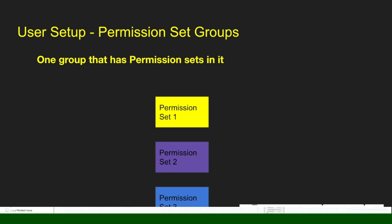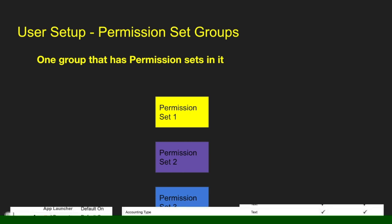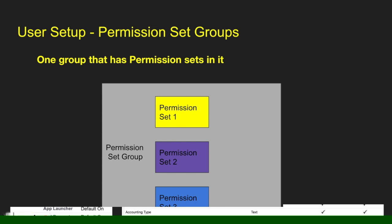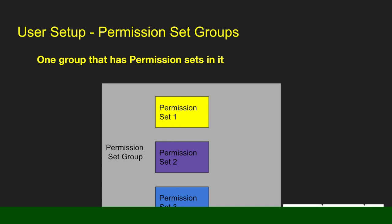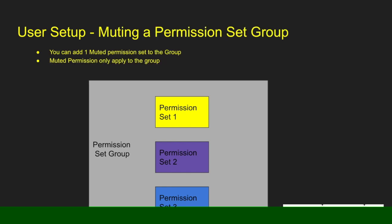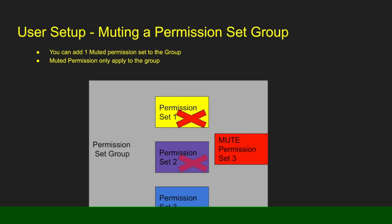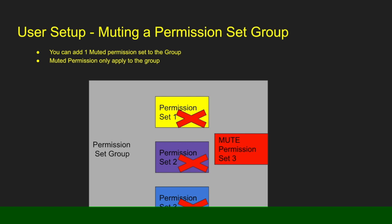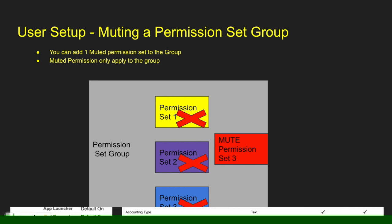A quick review of what a permission set group is: it's one group that has a lot of permission sets in it. So if we create permission set one, permission set two, permission set three, we can create a group and put all the permission sets in that one group. We can assign that permission set group to a user, and when that user gets that group, they get those additional permission sets. When you set up permission set groups, you also get the ability to have a muting permission set, which means that any of the permissions you assign within that group, you can actually mute out particular ones that grant additional access you don't want. So you can create a muting permission set that will remove access to any of the other permission sets — for example, if permission set one grants edit access for accounts, the muting permission set can remove that, so the group now does not have edit access on accounts.